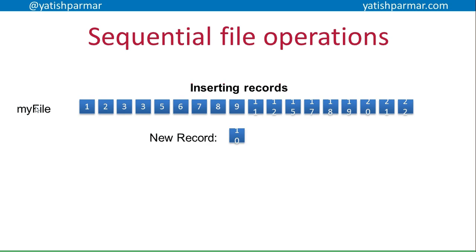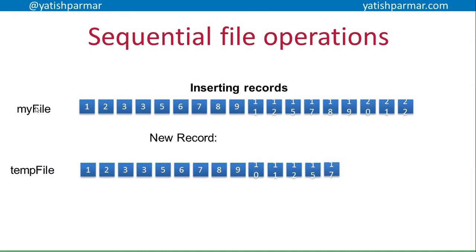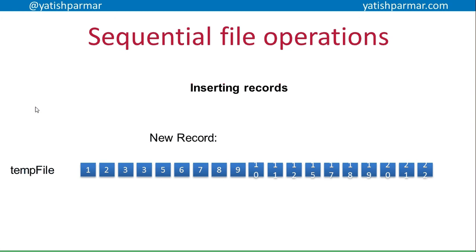So if we want to insert record number 10, you basically create a temporary file, copy up to the point of insertion, enter the new record, and then continue by copying the remaining records over. Then, similar to deleting records from the serial file, you delete the old file and rename the new one, so you now have something in memory that is the current file.